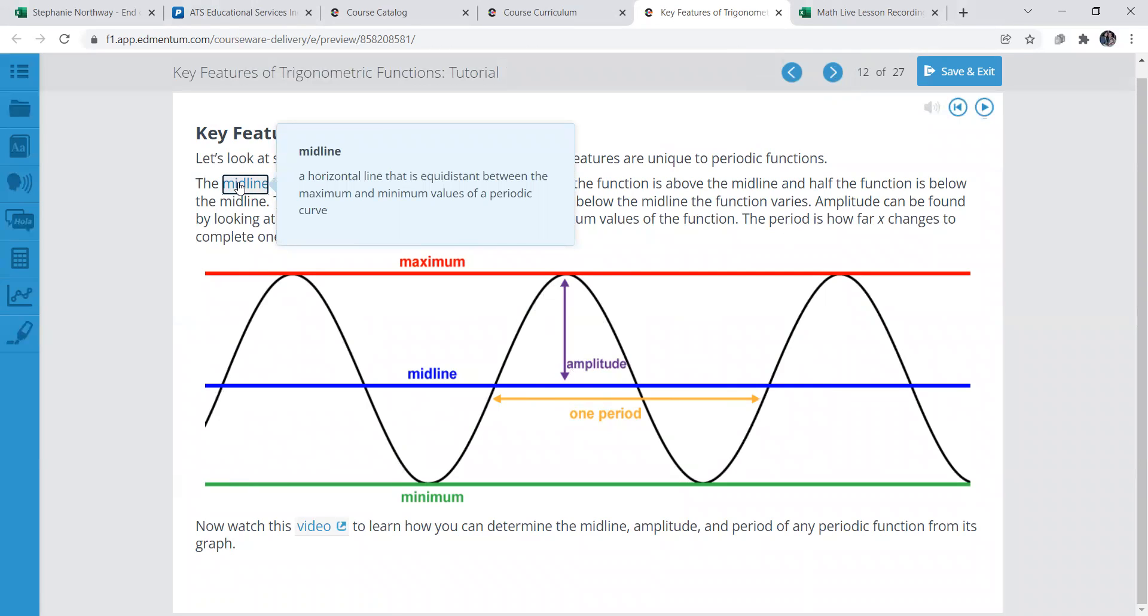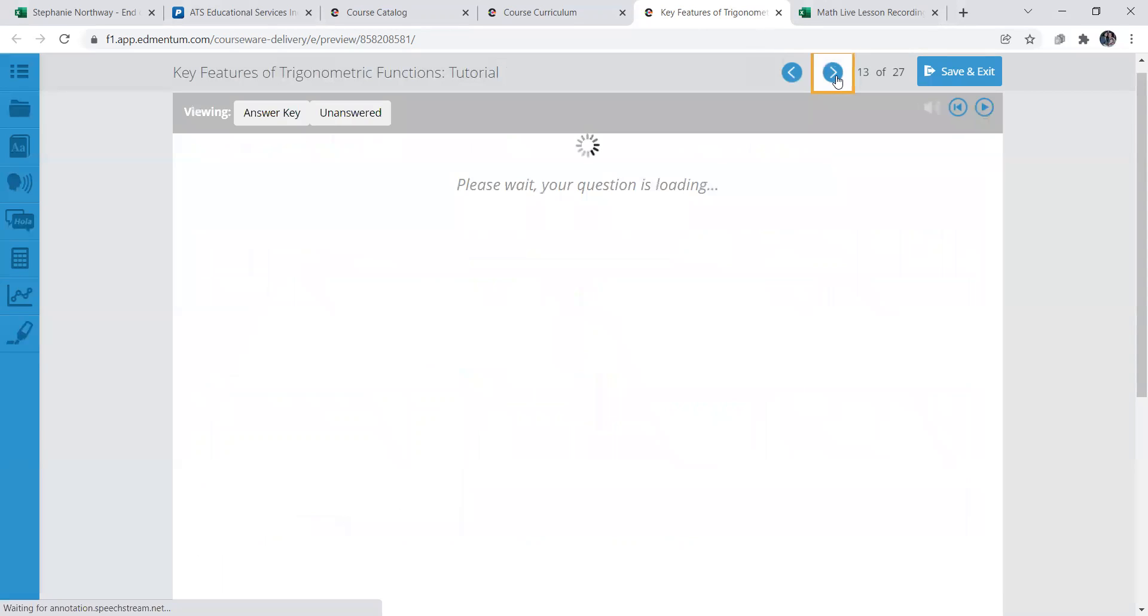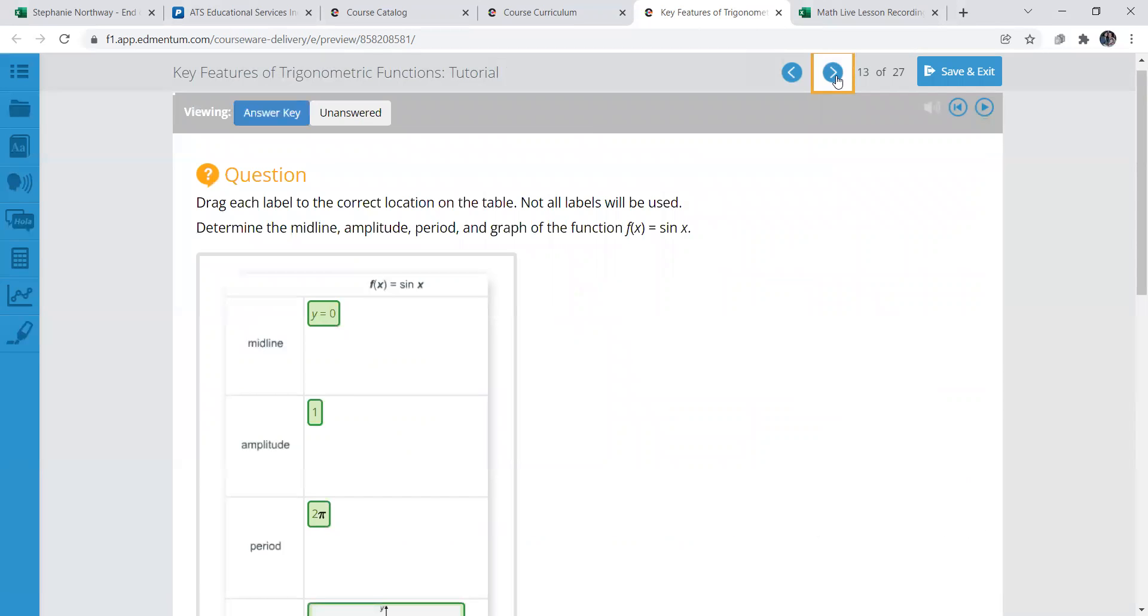So the midline: a horizontal line that is equidistant between the maximum and minimum values, like the middle point. Amplitude is, again, half of the difference between the maximum and minimum.